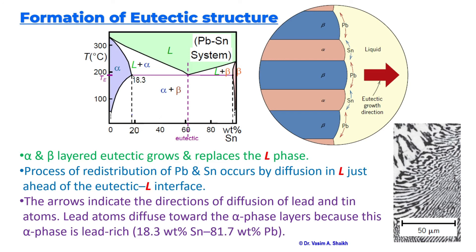This is how the formation of eutectic structure happens in the lead and tin system. Thanks for watching, all the best.